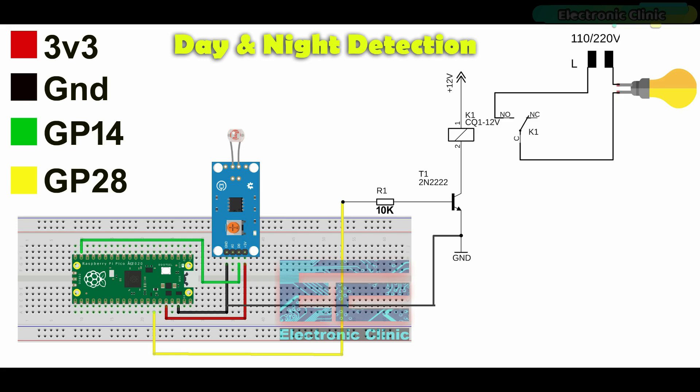The 2N2222 NPN transistor and a 10 kilo ohm resistor make the driver. I have a very detailed video on how to design your own driver circuit for different types of relays. I will provide a link in the description.